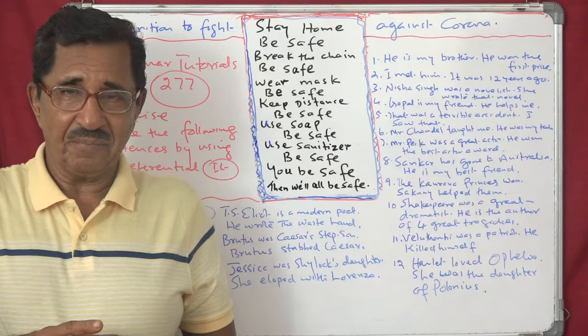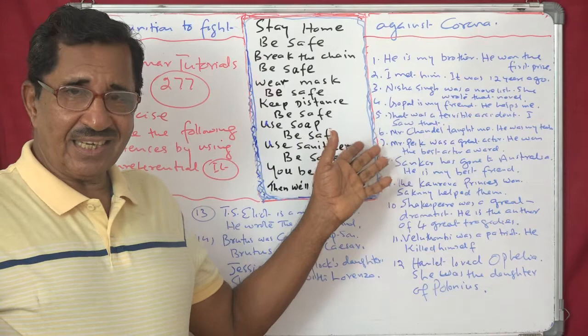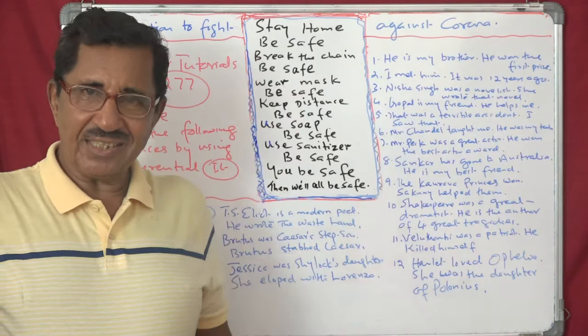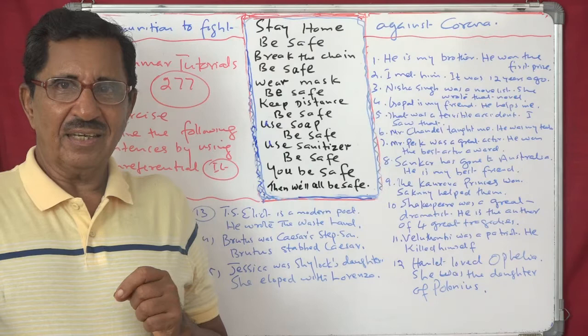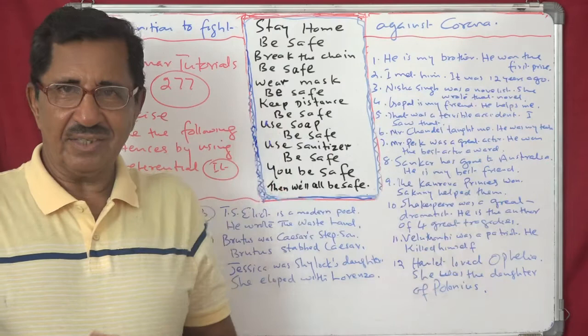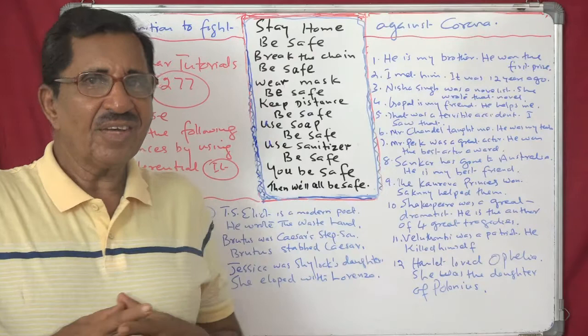You can use it to elevate your expression. For example: 'Shankar has gone to America. He is my best friend.' You can say: 'It is Shankar, my best friend, who has gone to America' — not any other person. So that way you are emphasizing and giving focus. For that also, this structure is important.